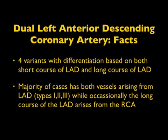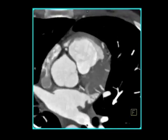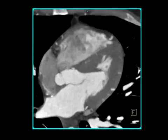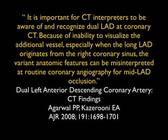When discussing dual LADs, there are basically four variations. The majority of cases have both vessels arising from the LAD, while occasionally the long course of the LAD arises from the right coronary. You can see the left main, the LAD, the circumflex, and then a vessel coming from right to left — a duplicated coronary artery. It's important to recognize this on CT because the additional vessel may be missed, and when the long LAD originates from the right coronary sinus, this anatomic variant may be misinterpreted as mid-LAD occlusion on coronary angiogram.